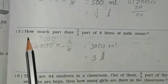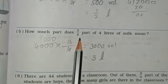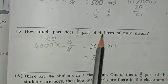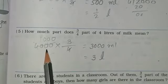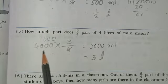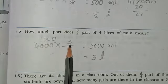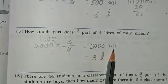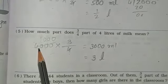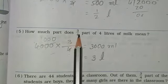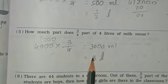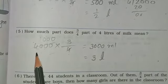Next, question number 5: how much part does 3 upon 4th part of 4 liters of milk mean? Same type of sum. First, convert 4 liters to milliliters: 4000 multiplied by 3 upon 4. Cancel the 4, giving 1000 multiplied by 3, which is 3000 milliliters. Convert back to liters: that is equal to 3 liters. You can also solve as 4 multiplied by 3 upon 4 — cancel the 4s and answer is 3 liters. Fifth sum completed.